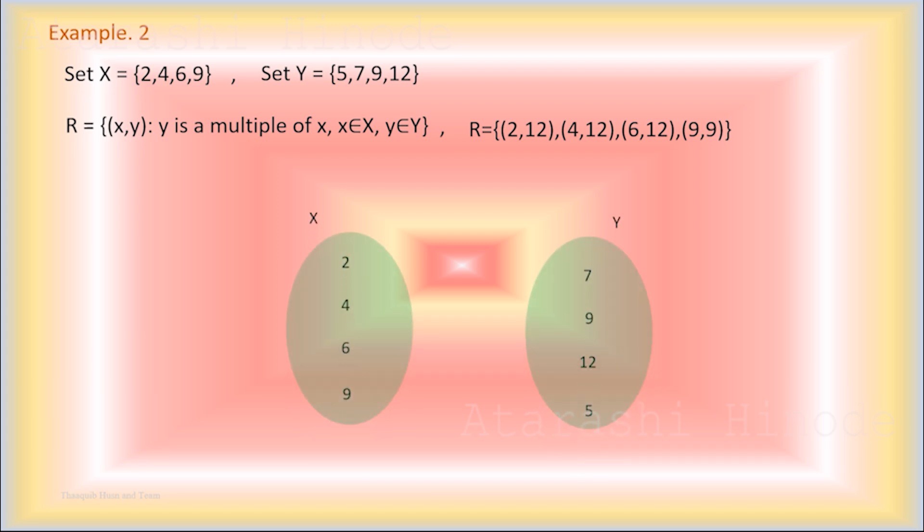So, according to the relation, 2, 4, 6 are mapped to 12 and 9 to 9. Here, the elements 7 and 5 don't have any pre-image.